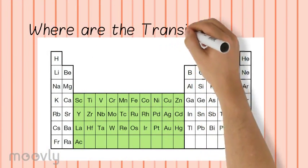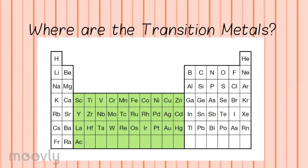Now that we understand what a transition metal is, we can move on to where it's found, and that would be in the middle of the periodic table, specifically groups 3 to 12. They are what connect the metals on the left-hand side to the metalloids and nonmetals on the right-hand side, hence the name transition metals.